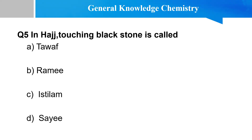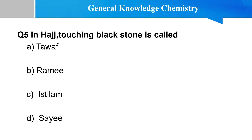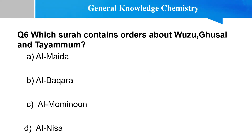In Hajj, touching the black stone is called... Next question: Which Surah contains the orders about Wuzu, Ghusl, and Tayammum? Options: Al-Ma'idah, Surah Baqarah, Surah Mominoon, Surah Nisa. The right option is Surah Al-Ma'idah.